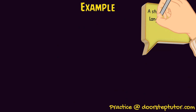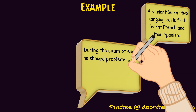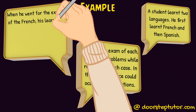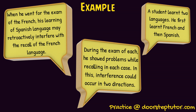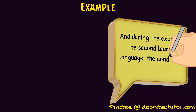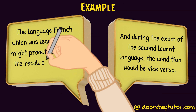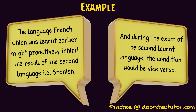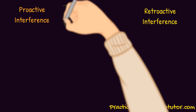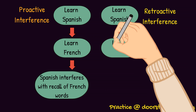Here is an example that illustrates interference theory, covering proactive and retroactive interference. Suppose a student studied two languages: he first learned French, then learned Spanish. According to this theory, interference can occur in two directions. When the Spanish exam happened, the French information studied before may proactively interfere with the recall of the newly acquired Spanish language. Conversely, when taking the French exam, the newly acquired Spanish might retroactively interfere with recall of French.